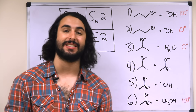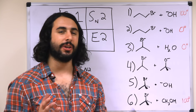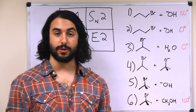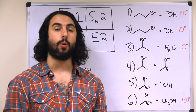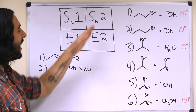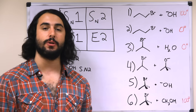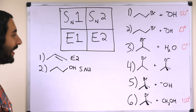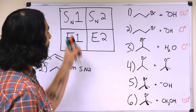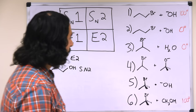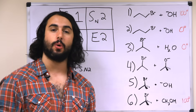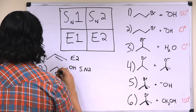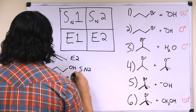Now we have a secondary substrate with water as the nucleophile. Water is a weak base, so it is a poor nucleophile — that means we can get rid of SN2 and E2 as possibilities because it's not strong enough to carry out either of those mechanisms. So we know we're going to get SN1 or E1. Looking at the temperature — let's say 0°C — that means we're going to favor SN1 because colder temperatures favor substitution, giving us our SN1 product.